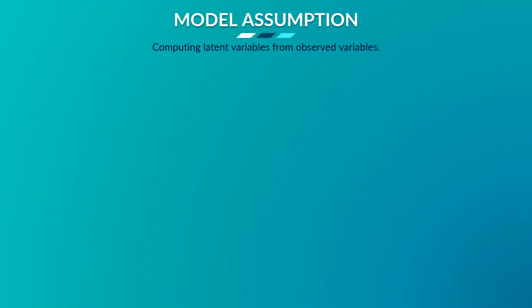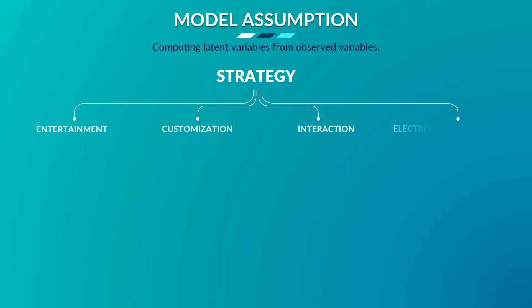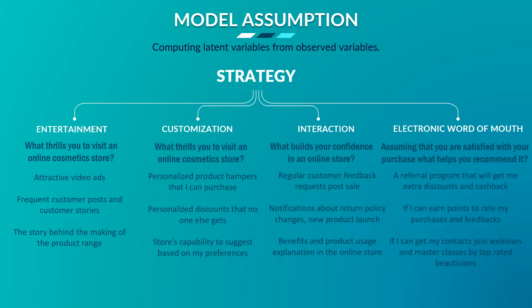The analysis is to be based on four dimensions represented by the latent variables, which are further based on the set of statements or observed variables from the questionnaire. Accordingly, I am assuming that the model is: Social Media Strategy = Entertainment + Customization + Interaction + Electronic Word of Mouth, where Entertainment = attractive video-based ads + lots of posts + behind-the-scenes availability; Customization = personalized service availability + personalized offers availability + recommendations availability; Interaction = regular customer feedback collection + disseminating up-to-date information + availability of customer-relevant content; Electronic Word of Mouth = referral marketing availability + customer ratings and reviews sharing facility + promotion of user-generated content.